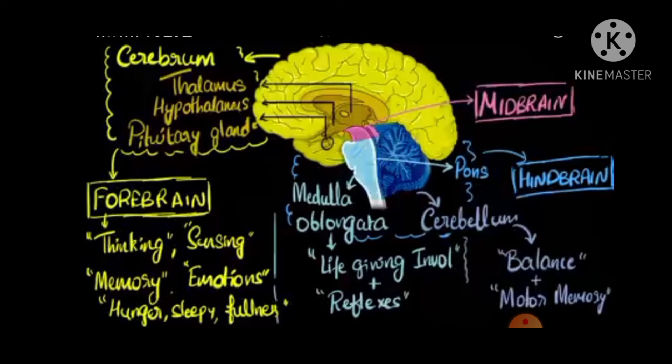To summarize, the brain is divided into three portions: forebrain, midbrain, and hindbrain. The forebrain consists of the cerebrum, thalamus, hypothalamus, and pituitary gland, and is related to all voluntary actions such as thinking, singing, dancing, jumping, and emotions like hunger and sleep. The hindbrain, shown in blue, is related to life-giving reflexes as well as balance. The midbrain is related to involuntary functions like vision, hearing, and motor control.